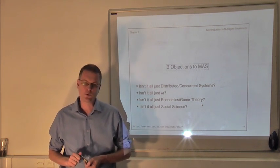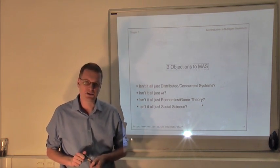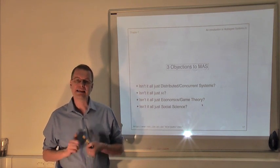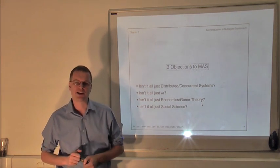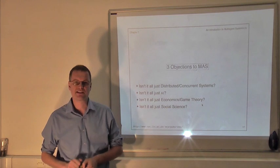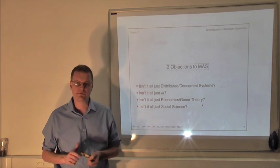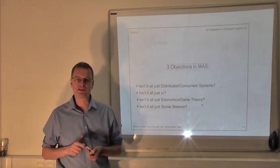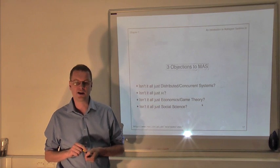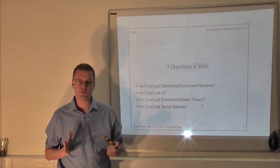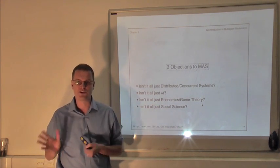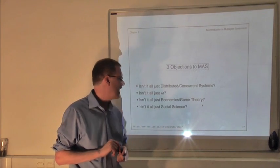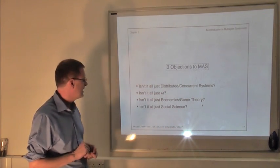The last point I want to talk about relating to chapter 1 of the book is some common objections to multi-agent systems and some standard questions that you get when presenting these ideas to people, either in computer science or from other disciplines.